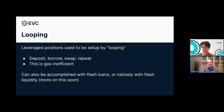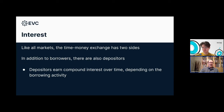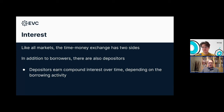Flash liquidity generalizes flash loans and makes it so flash loans aren't strictly necessary. Like all exchanges, interest rates have two sides — as well as borrowers there are also depositors, the people being borrowed from. In order to incentivize depositors to use a pool, they need to earn interest. In most systems, depositors earn compound interest over time, and the actual interest level depends on the borrowing activity — to incentivize more borrowing when there's little activity, and disincentivize it when there's too much.